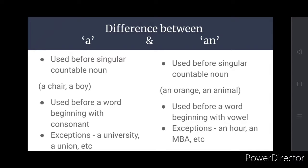A is used before consonant and an is used before a vowel. But both of these have some exceptions like a university, a union. Because when we say university, the pronunciation of university starts with y.